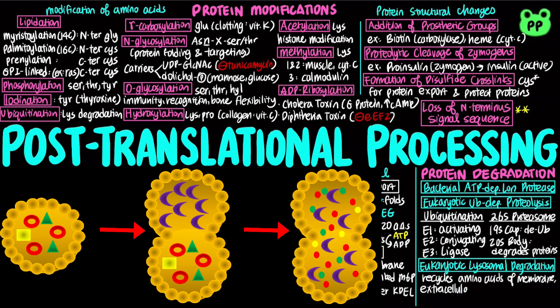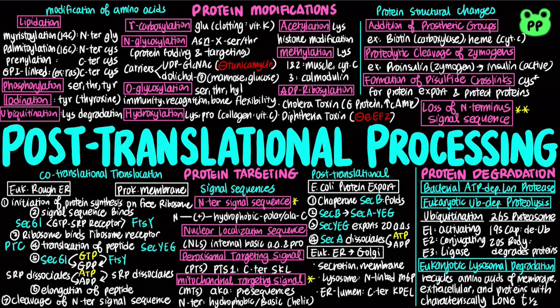As mentioned earlier, the Golgi apparatus adds N-linked mannose-6-phosphate to proteins that are targeted to the lysosome.